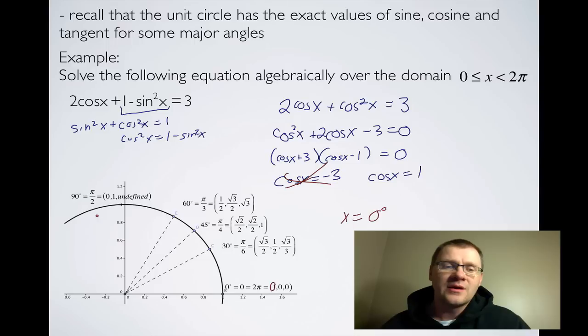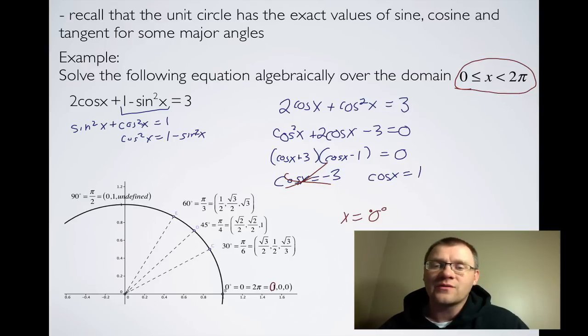And then the next place it would be, it wouldn't be 2π because that would be a -1. The next place it would be 2π. But the restrictions on this variable say that we can't equal 2π. So we only have one answer, and that is x = 0.